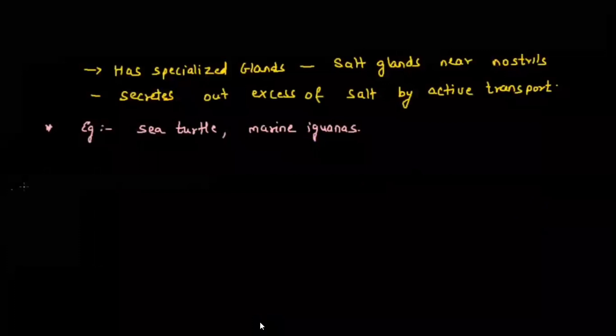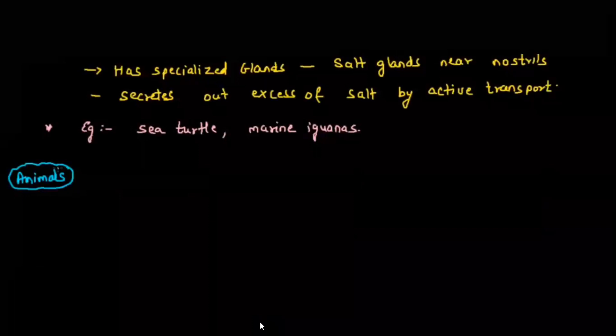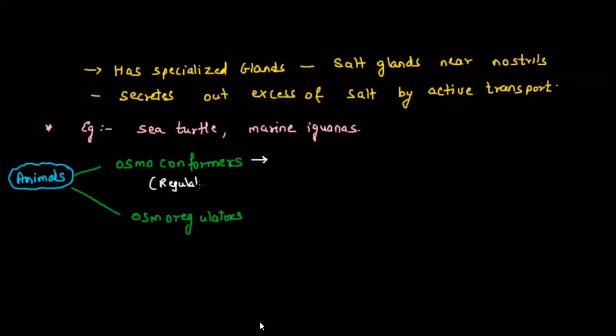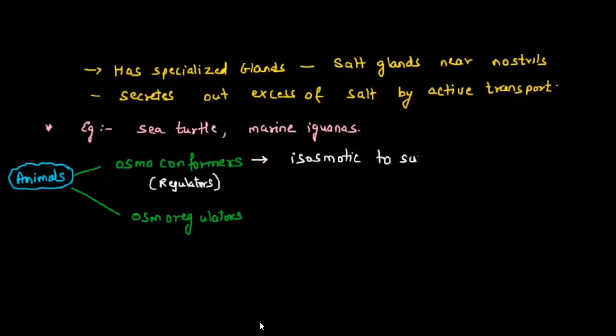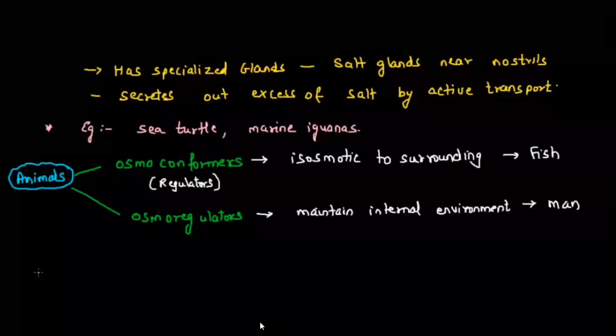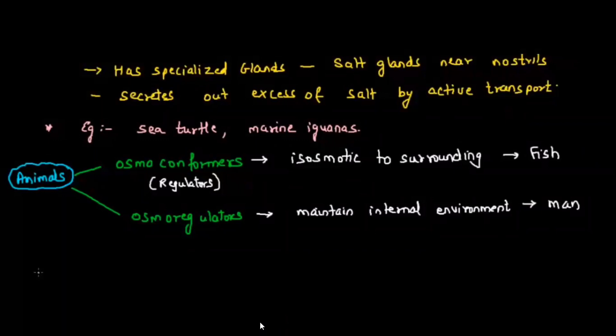In terms of excretion, animals can be classified as osmoconformers or osmoregulators. Osmoconformers are also called regulators — they are iso-osmotic to their surroundings; fish are an example. Osmoregulators always maintain their internal environment constant, like us — no matter whether in the ocean or in a river, the amount of salt in the body always remains constant, because of homeostasis.